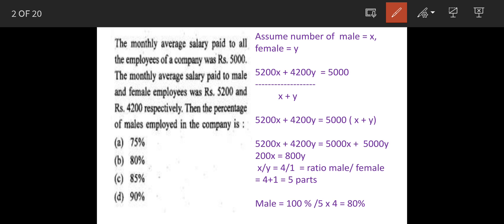Let's assume that males are x and females are y. As per the question, male salary is 5,200, so 5,200 times x, and female salary is 4,200, so 4,200 times y, divided by the total numbers x plus y. This equals the total average salary 5,000.